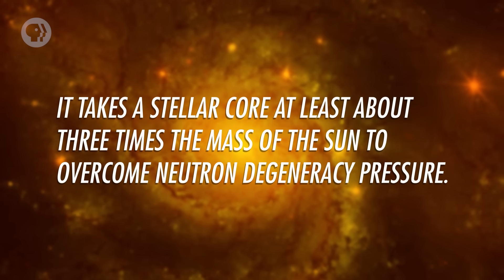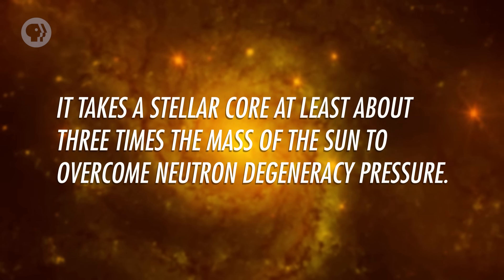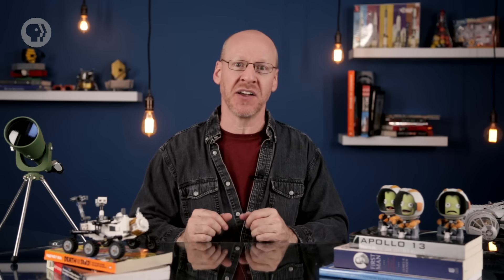Alright, let's get this out of the way right now. The Sun cannot become a black hole. It takes a stellar core at least about 3 times the mass of the Sun to overcome neutron degeneracy pressure. That means the original star must have something like 20 times the Sun's mass or more. So we're safe from that particular sci-fi scenario.